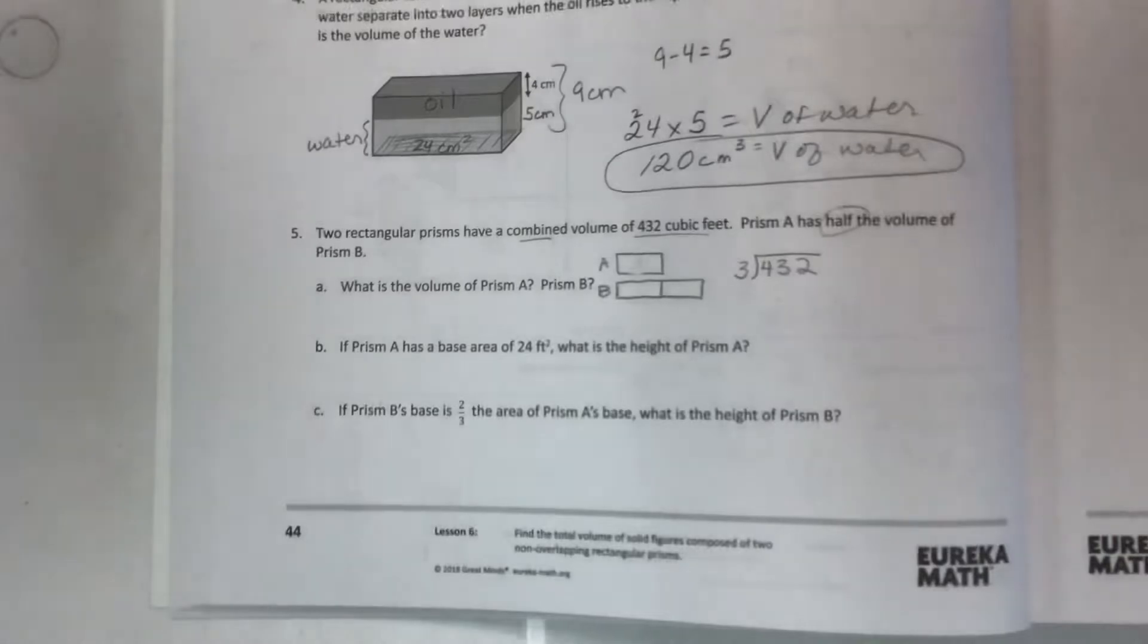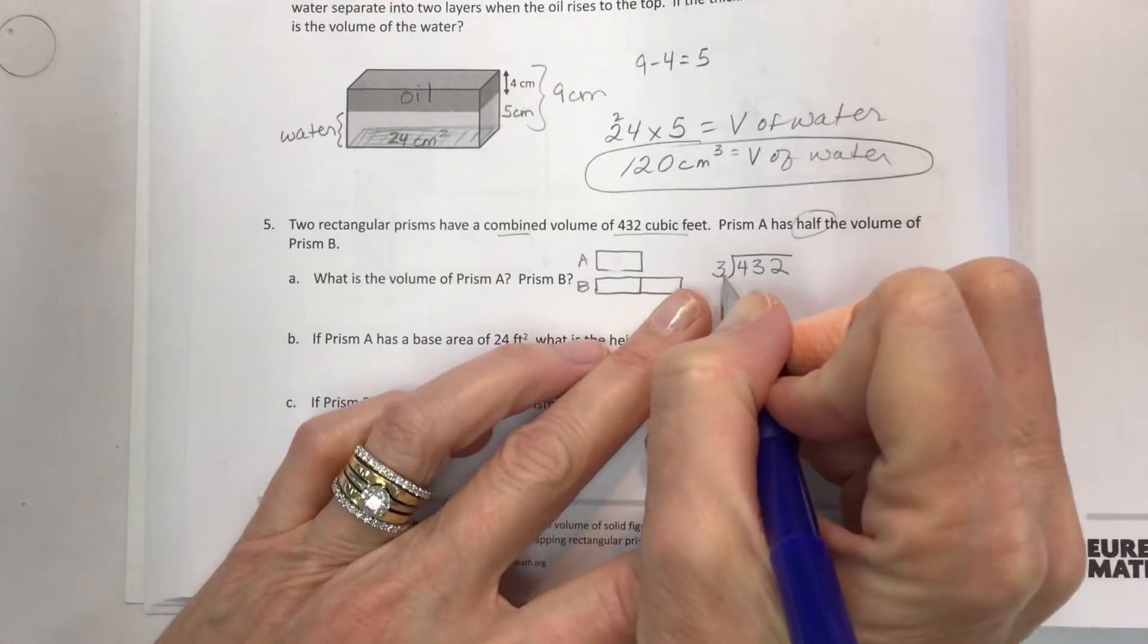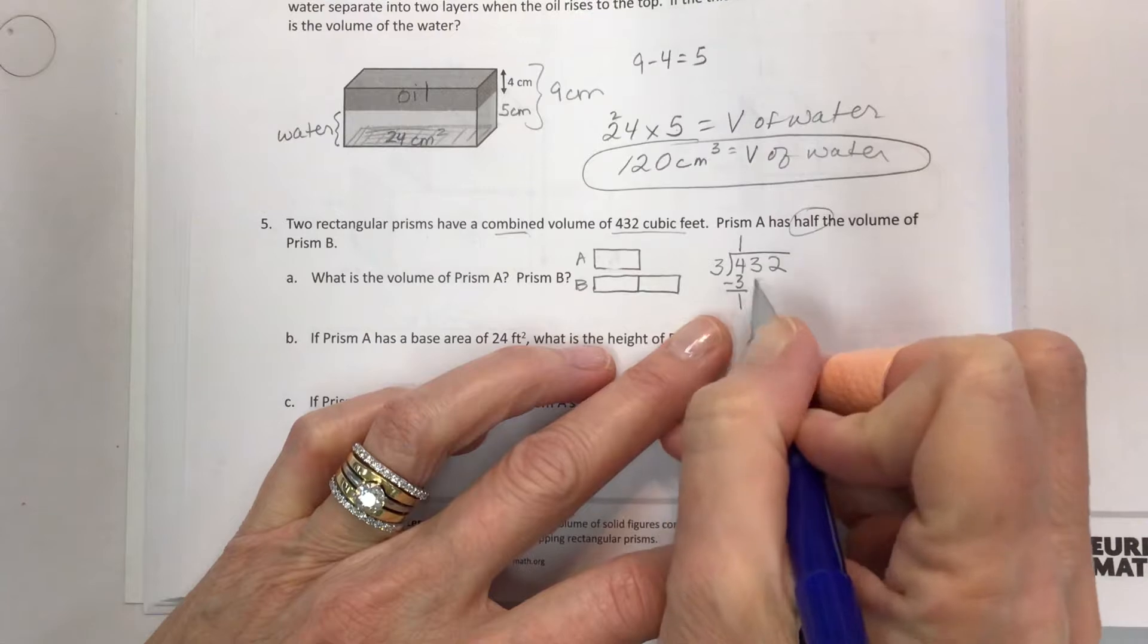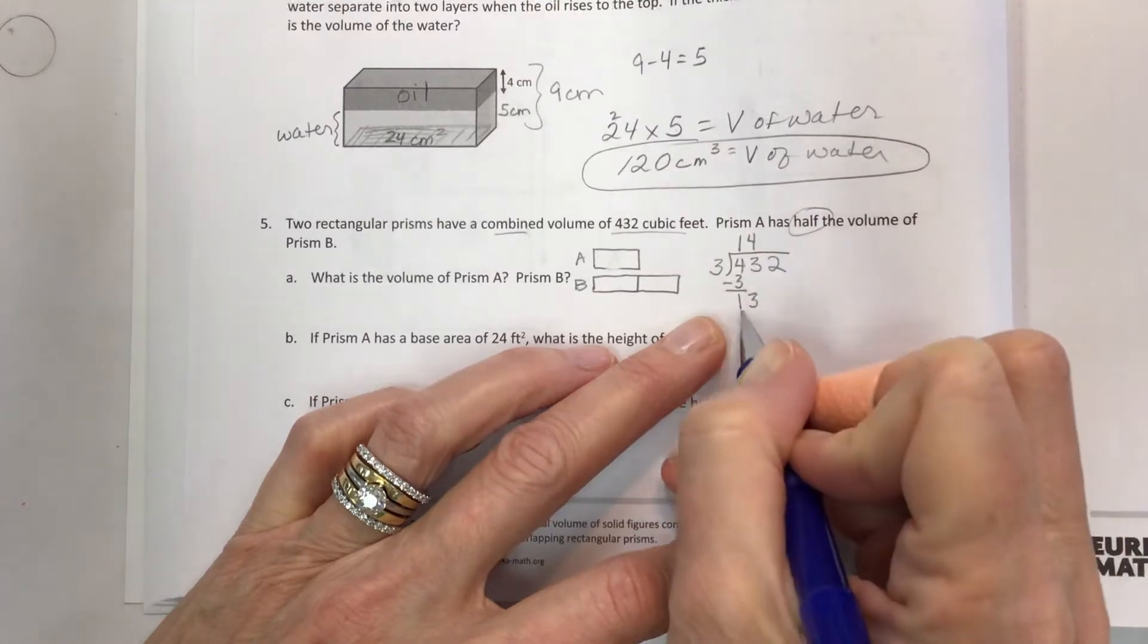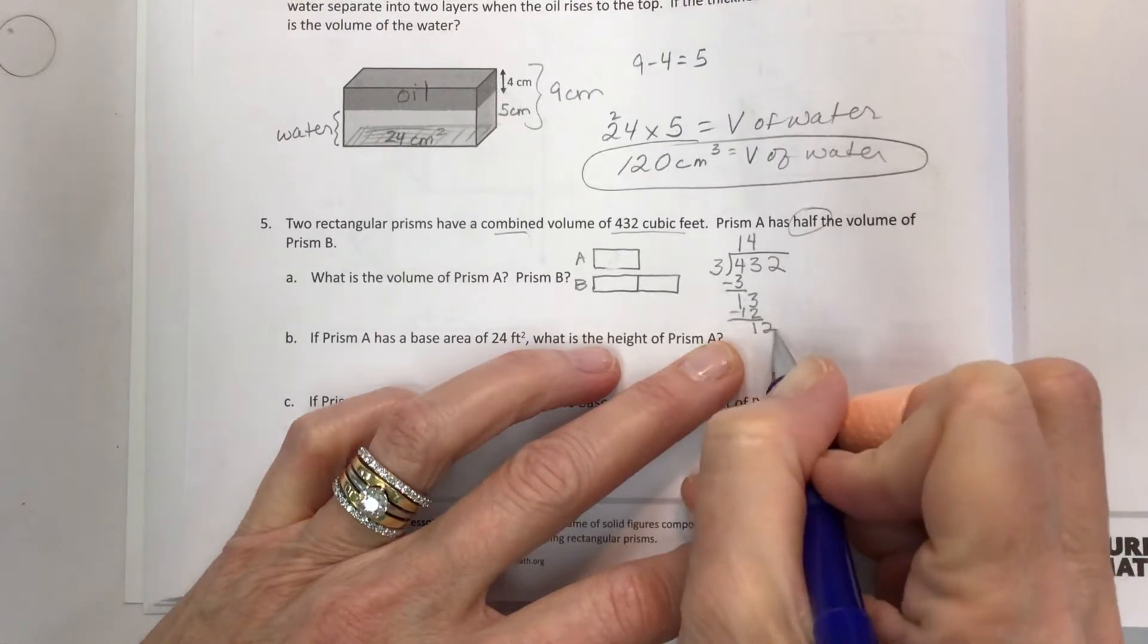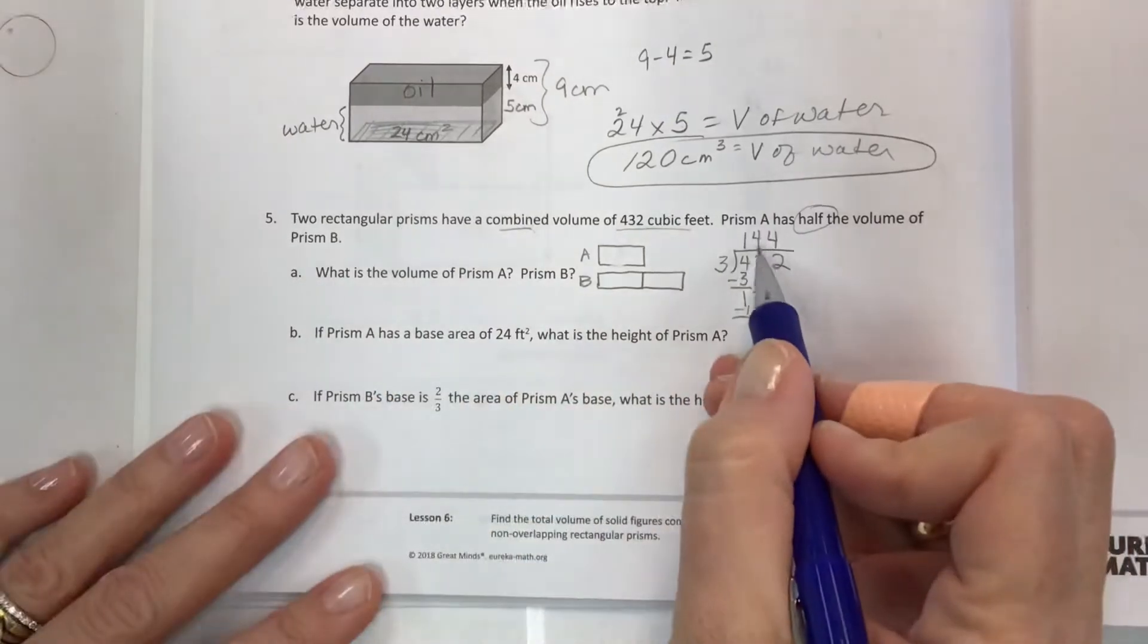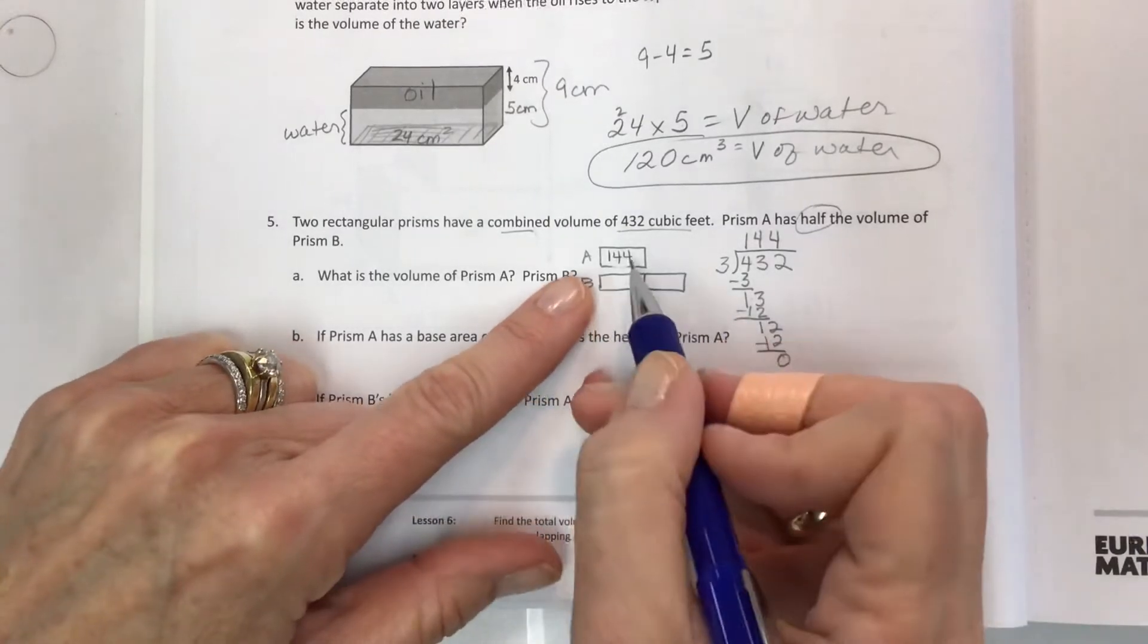So start dividing 4 by 3. This is just standard algorithm one step at a time. You get one 3 in there, divide, multiply, then subtract, one left over, quick compare, bring down. Divide 13 by 3, 4 times 3 is 12, subtract, get one, quick compare, bring down. Divide again 12 divided by 3, 4 times 3 is 12, we end up with a 0.